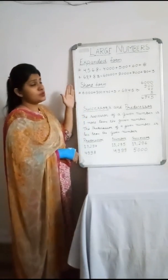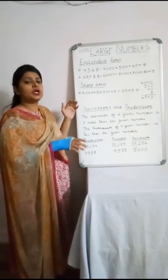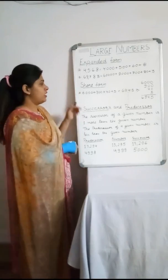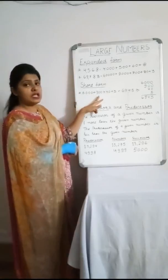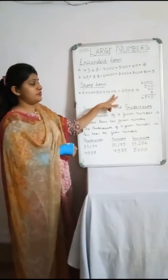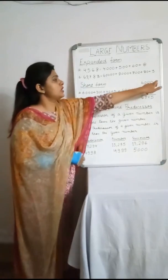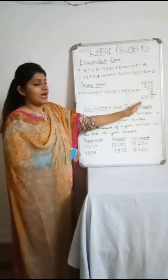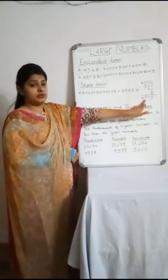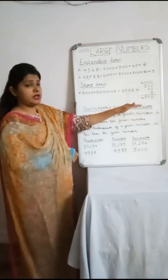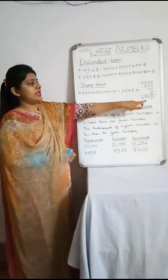Now we move on to short form. Short form is the opposite of expanded form — it is the contracted form. In question number eight, the expanded form given is 6,000 + 900 + 40 + 5. We add all these together to get the short form, which is six thousand nine hundred forty-five.